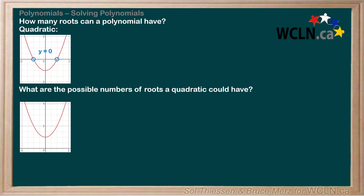Start by looking at this graph. It's a plot of y equals x squared plus 1. Since the low point of the u-shaped parabola is higher than the x-axis, the quadratic will have zero roots.